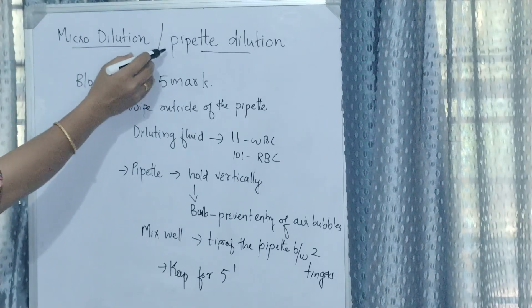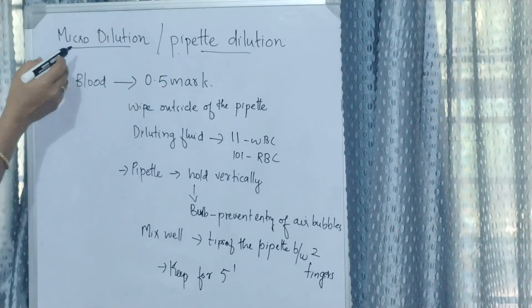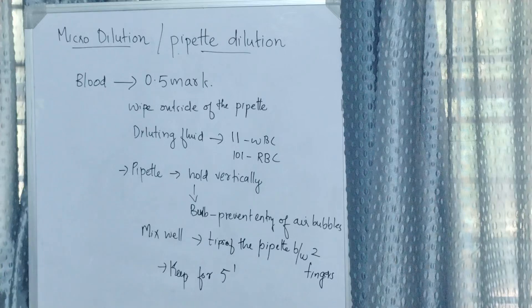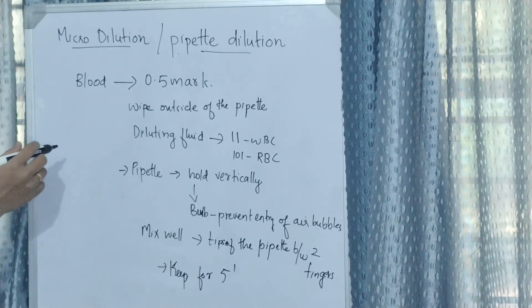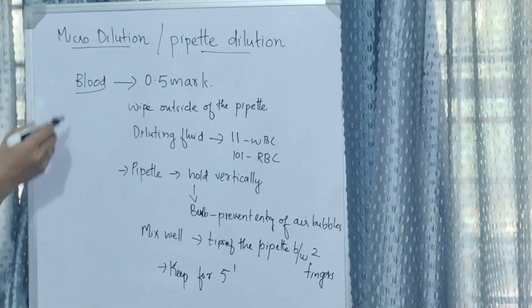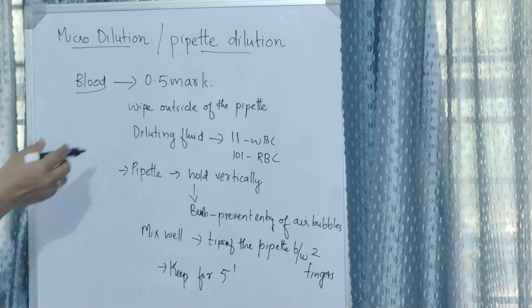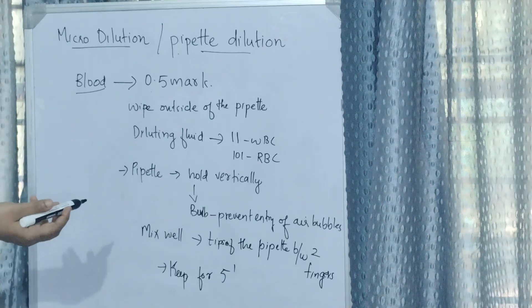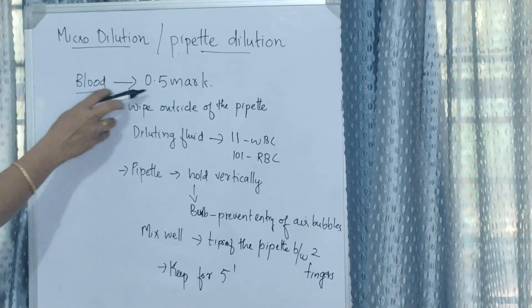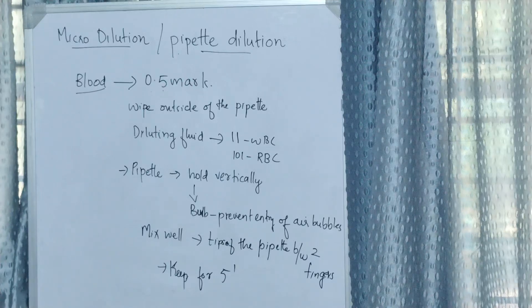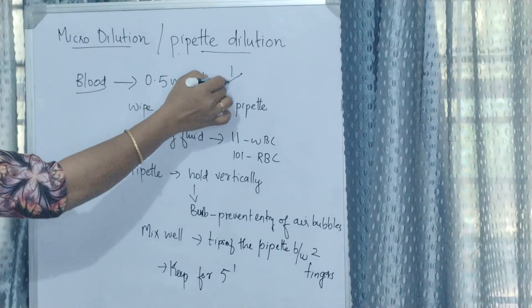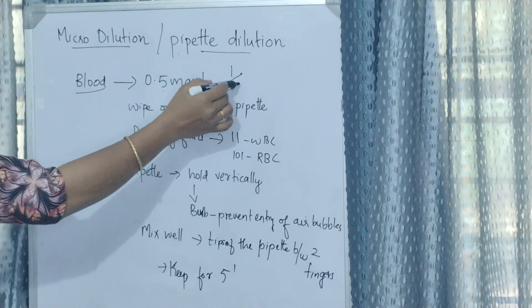Micro dilution or pipette dilution: if using pipettes for dilution, either WBC pipette or RBC pipette, it's called micro dilution. Blood is taken up to 0.5 mark in either WBC or RBC pipette. In RBC pipette we use 1 in 100 dilution, and in WBC pipette we use 1 in 20 dilution.